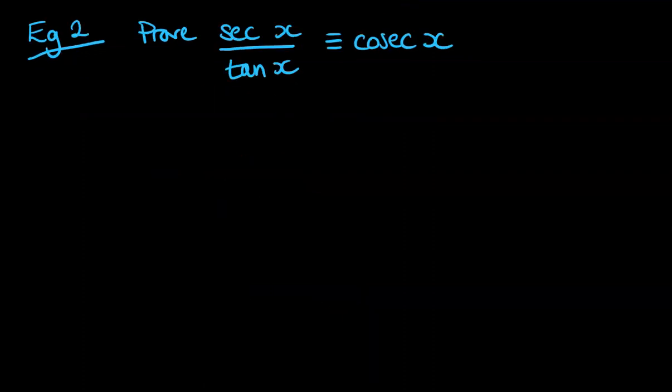And we'll do another example. This time we're asked to prove that sec x over tan x is equal to cosec x. So if we start with the left-hand side, this would be, well, sec is 1 over cos. That's being multiplied by 1 over tan, but 1 over tan would be cos x over sine x.